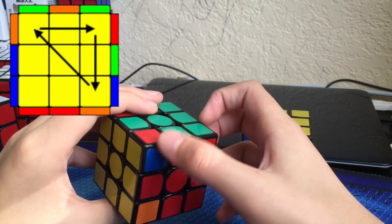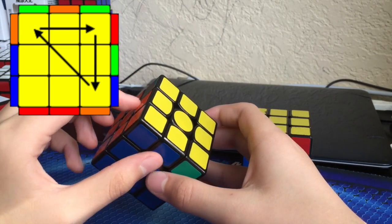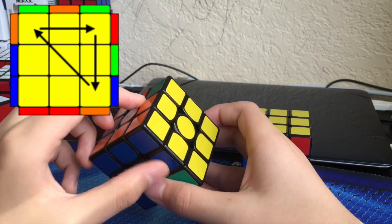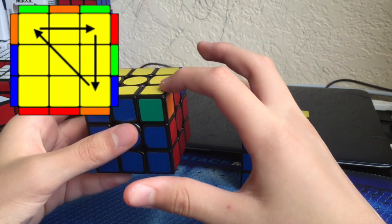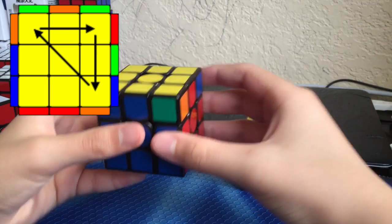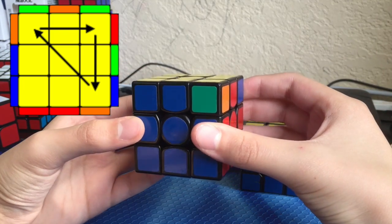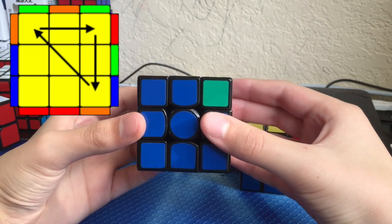You already have this solved corner right here, so you have this little block here with these two edges already solved. We're cycling these three corners clockwise like that. Hold the cube like this and perform this algorithm.